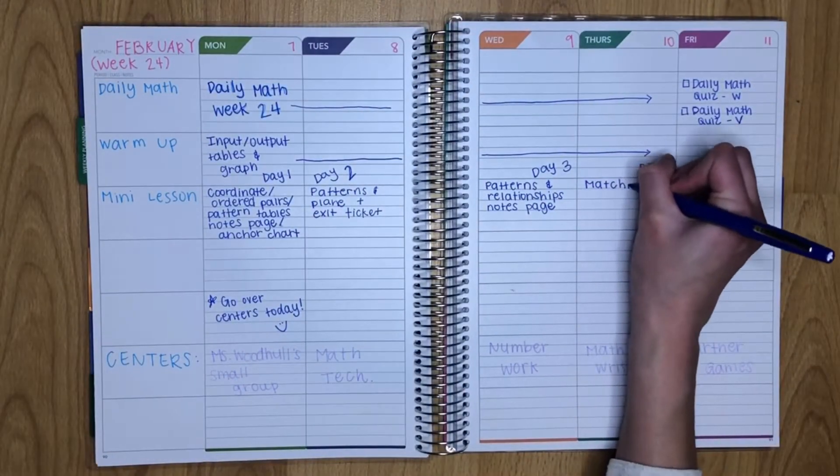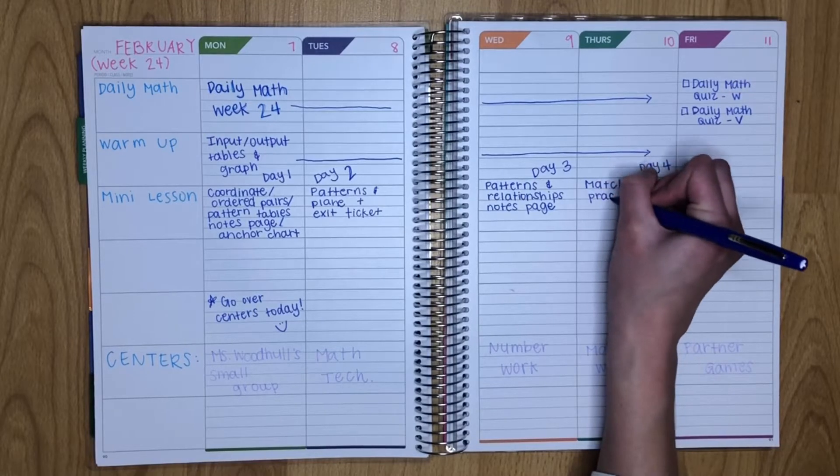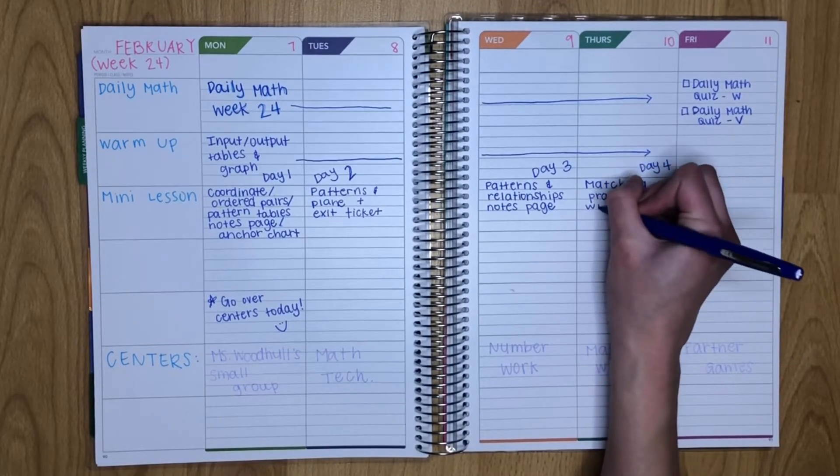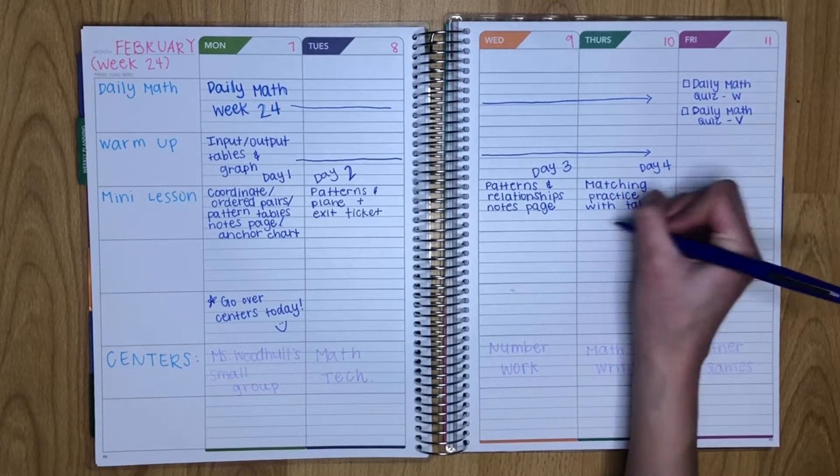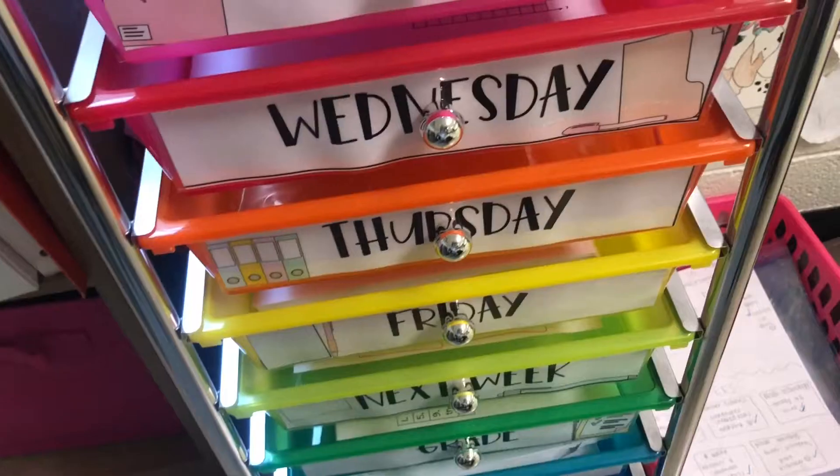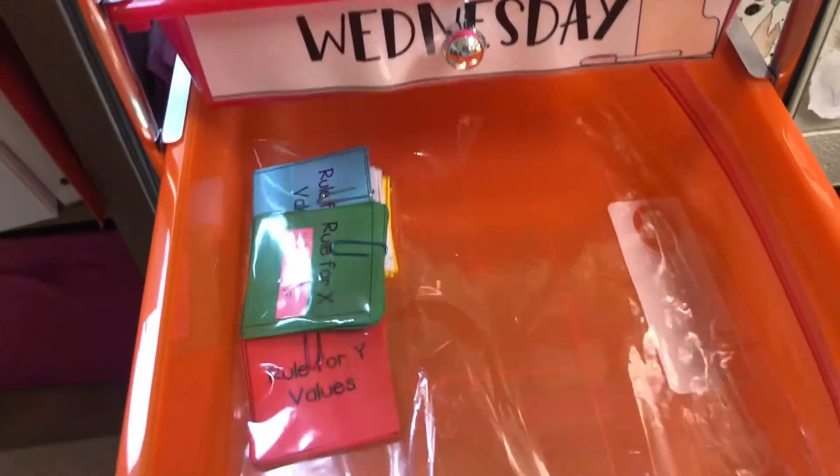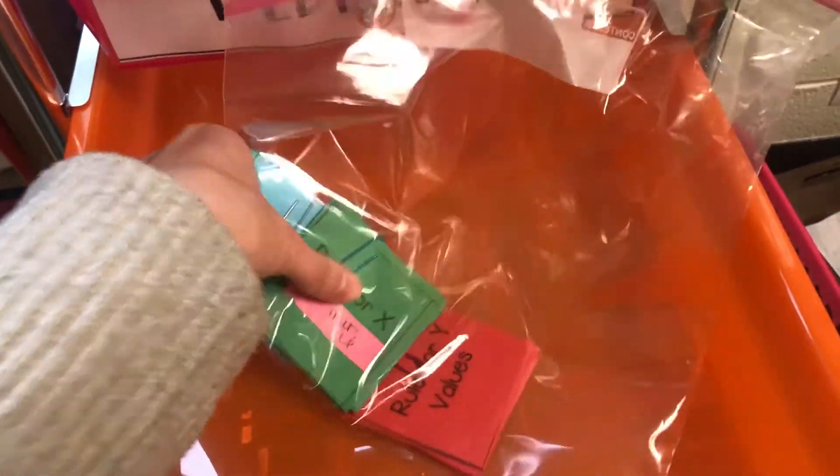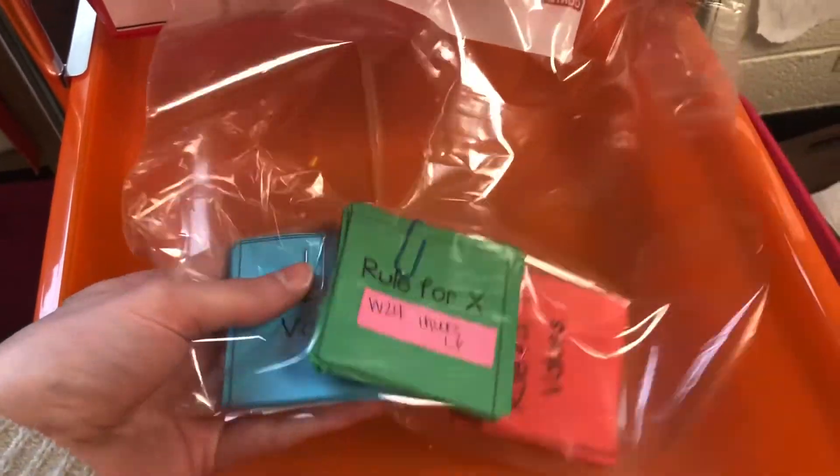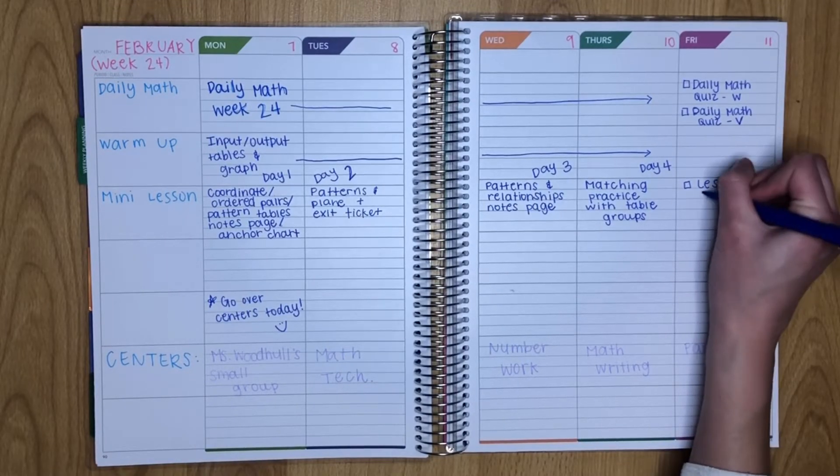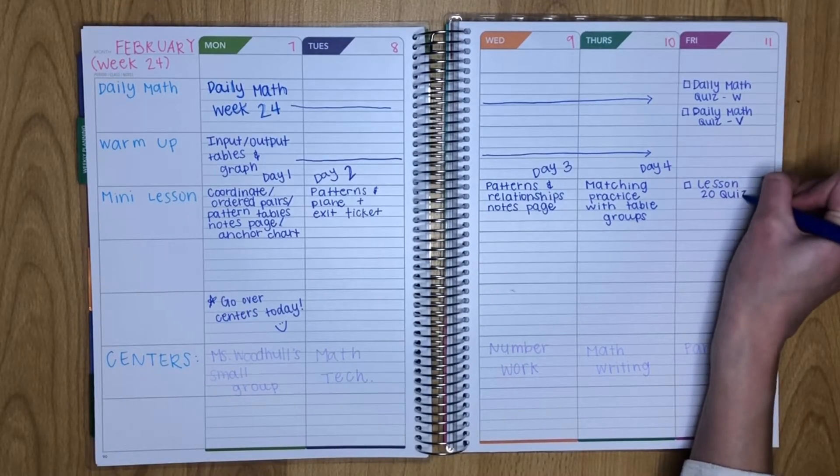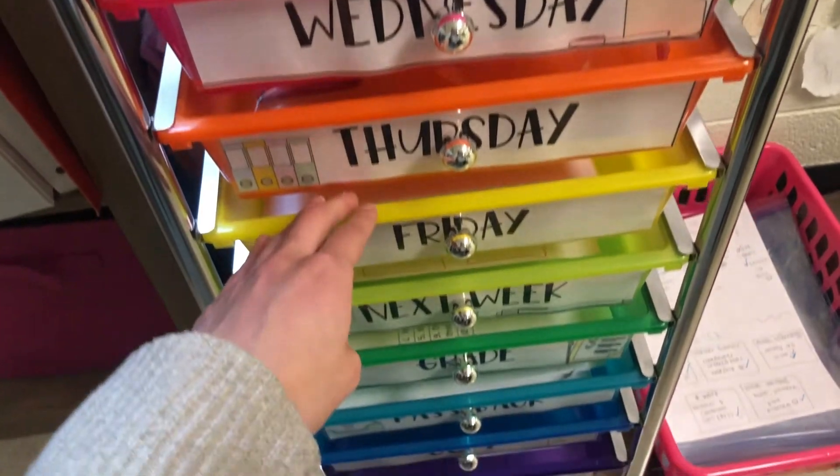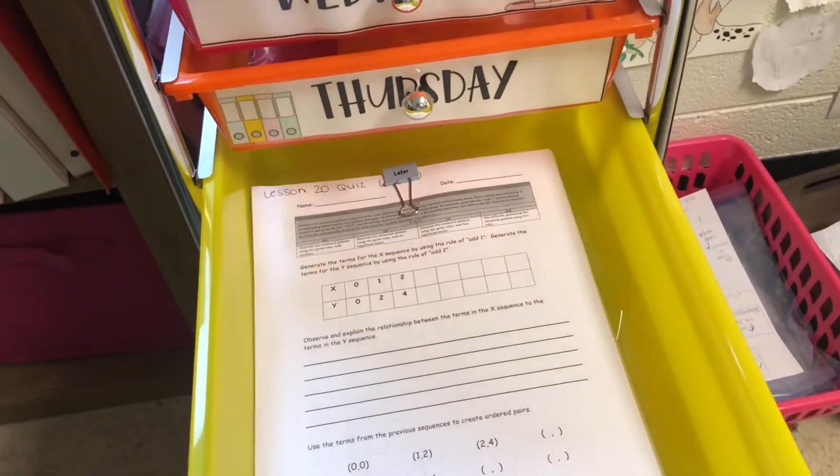So by Thursdays, students are more familiar with the skill, and this Thursday's mini-lesson will be a matching practice that the students will do with their table groups. So in my Thursday drawer, I have a bundle for each table to match the rules, ordered pairs, and coordinate graphs. On Fridays, we put their knowledge to the test with a lesson quiz. So looking in our Friday drawer, we have our lesson 20 quiz.